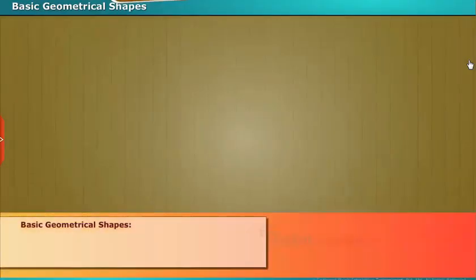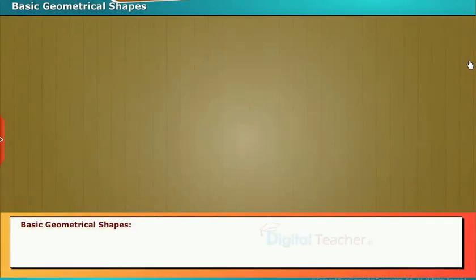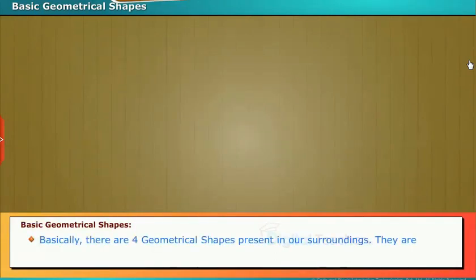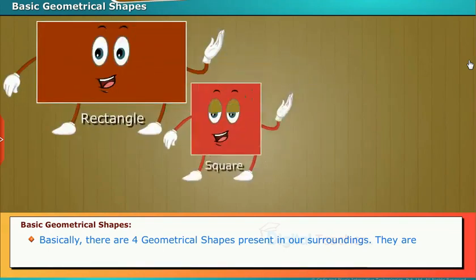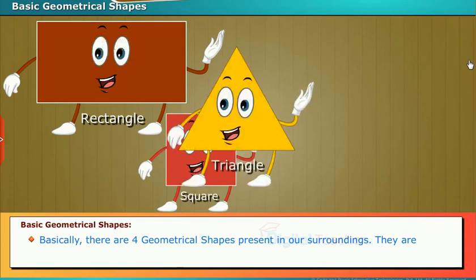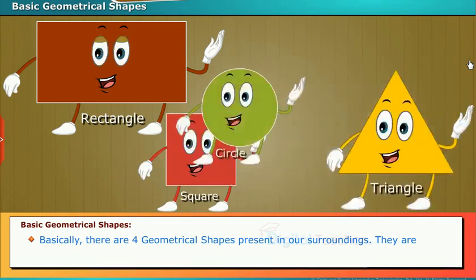Basic geometrical shapes: Basically, there are four geometrical shapes present in our surroundings. They are rectangle, square, triangle and circle.